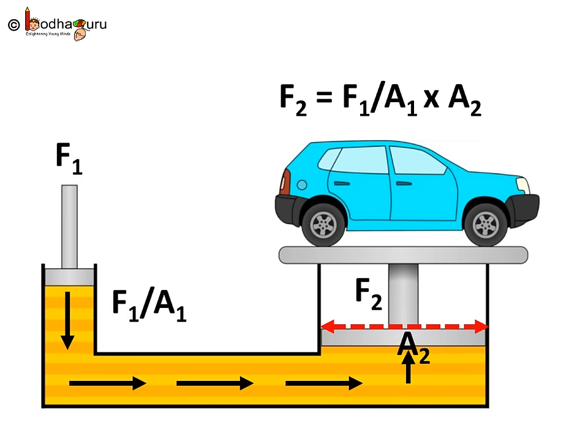Here, pressure is equal to F1 divided by A1 and area is equal to A2. So, what is F2? F2 equals pressure multiplied by area, so this becomes equal to F1 divided by A1 multiplied by A2.